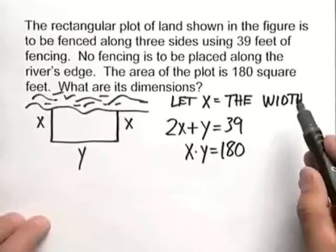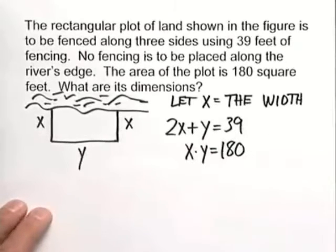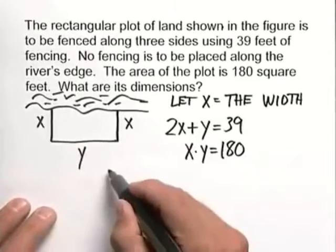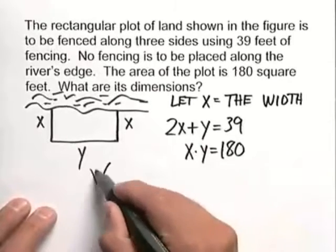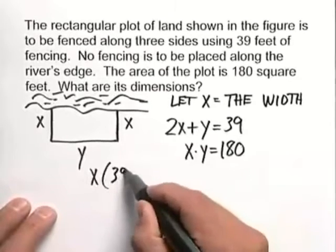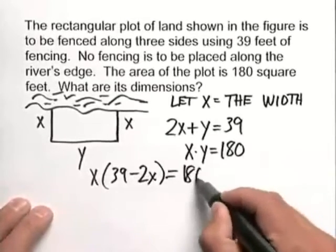So let's solve for y in the first equation. That'll give us 39 minus 2x, and then we can plug that into our area equation. And so from that, we're going to have x times the quantity 39 minus 2x, and that is equal to 180.